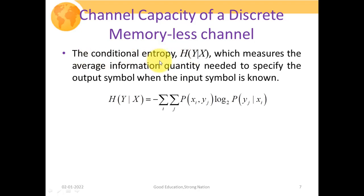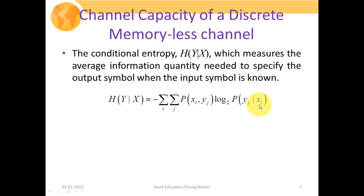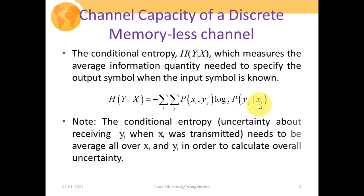The conditional entropy H(Y|X) is the uncertainty in observing Y given that symbol X was transmitted. It measures the average information needed to specify the output symbol when the input symbol is known: H(Y|X) = −∑_i ∑_j P(Xi, Yj) log₂ P(Yj | Xi). The double summation is needed because the uncertainty about receiving symbol Yj when Xi was transmitted must be averaged over all Xi's and Yj's to calculate overall uncertainty.